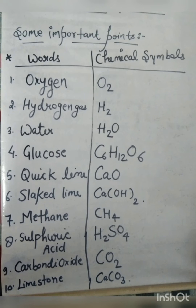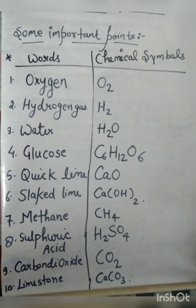Some Important Points — Words and Chemical Symbols. 1. Oxygen. 2. Hydrogen Gas. 3. Water. 4. Glucose — C6H12O6.